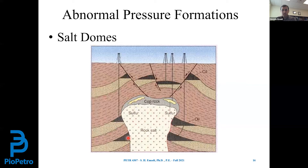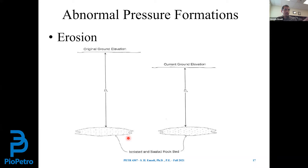Erosion: if erosion happens, as you can see, if the original ground elevation was D-sub-1 and after erosion it reduces to D-sub-2, you see a reduction in TVD with the same pressure. So by normal drilling operation we expect a lower pore pressure. However, in reality when we start drilling, we see a higher pressure gradient.